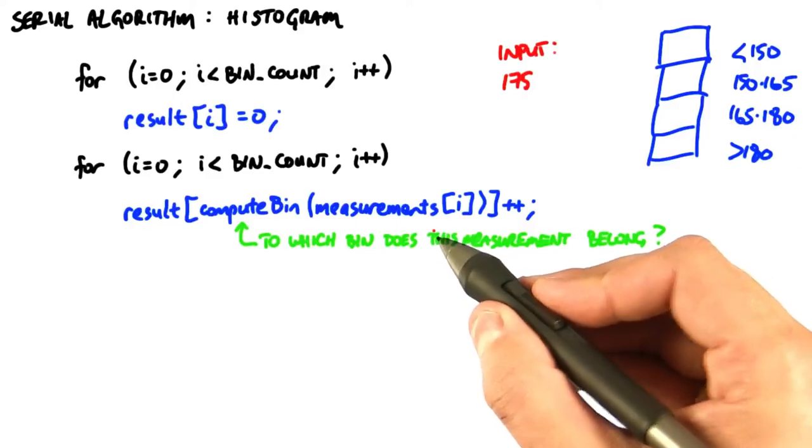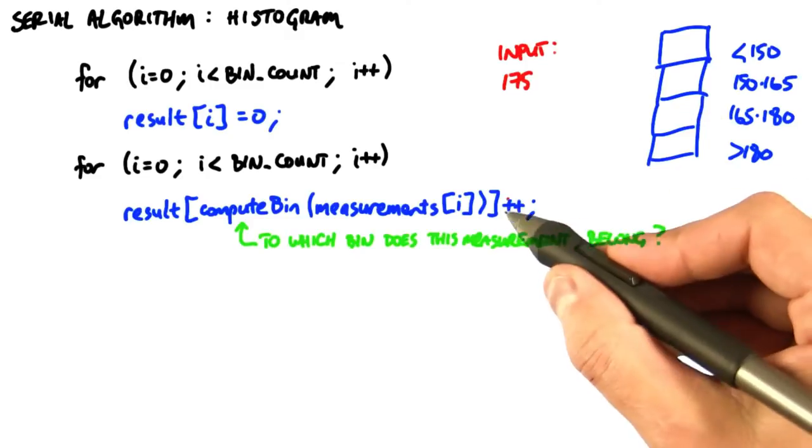So, we take 175, it's then associated with this bin, and now we increment the value of this bin.